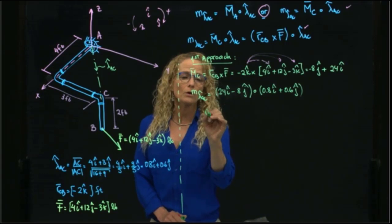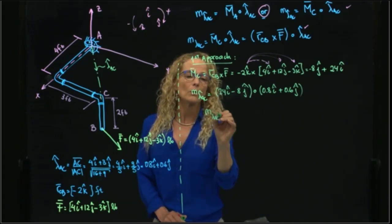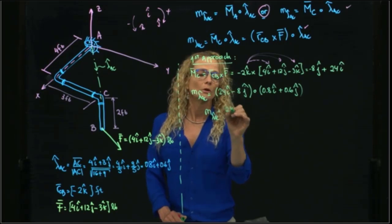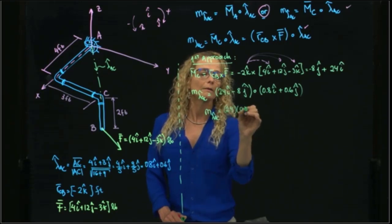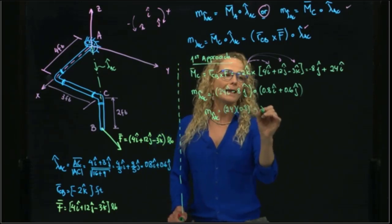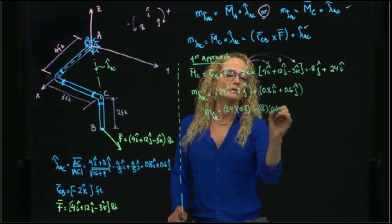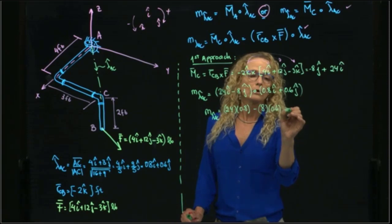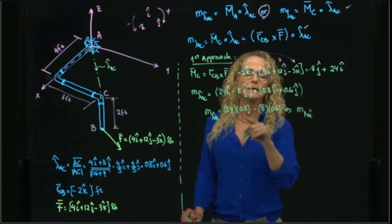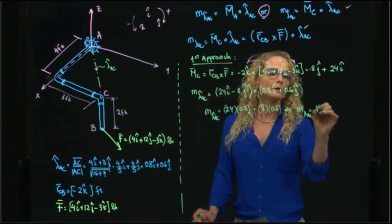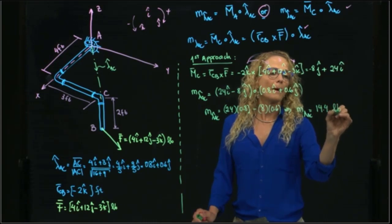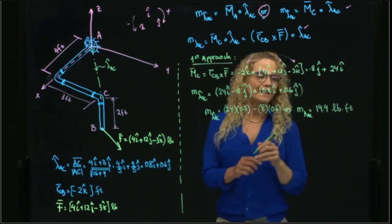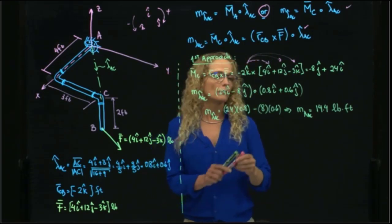So therefore, my result is equal to 24 times 0.8 minus 8 times 0.6. And if you do these calculations, you get that the value will be equal to 14.4 pounds per feet. And this is the result for that moment.